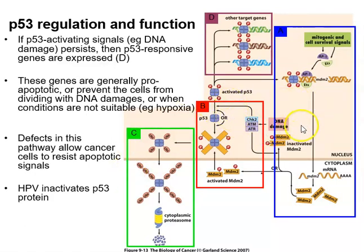P53 loss is fundamental to tumour formation because DNA damage drives cancer, and cancers have many mutations. If cells do not express P53, none of the P53 response genes are expressed: no BAX means no apoptosis, no P21 means no cell cycle arrest, and no DNA repair genes means DNA damage accumulates. This further exacerbates the accumulation of mutations critical to cancer progression.